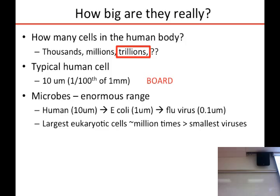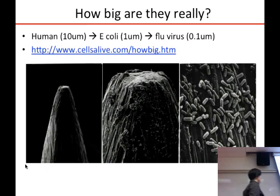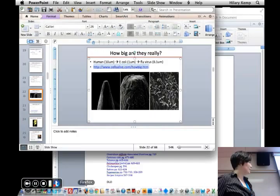There's quite an enormous range of size in the microbial world. Human cells, as I said, are 10 to 30 microns. An E. coli cell is one micron. A flu virus is 0.1 micron. The largest eukaryotic cells are about a million times larger than the smallest viruses. Here's a scanning electron micrograph of the head of a pin where you can see it's coated with bacterial cells.